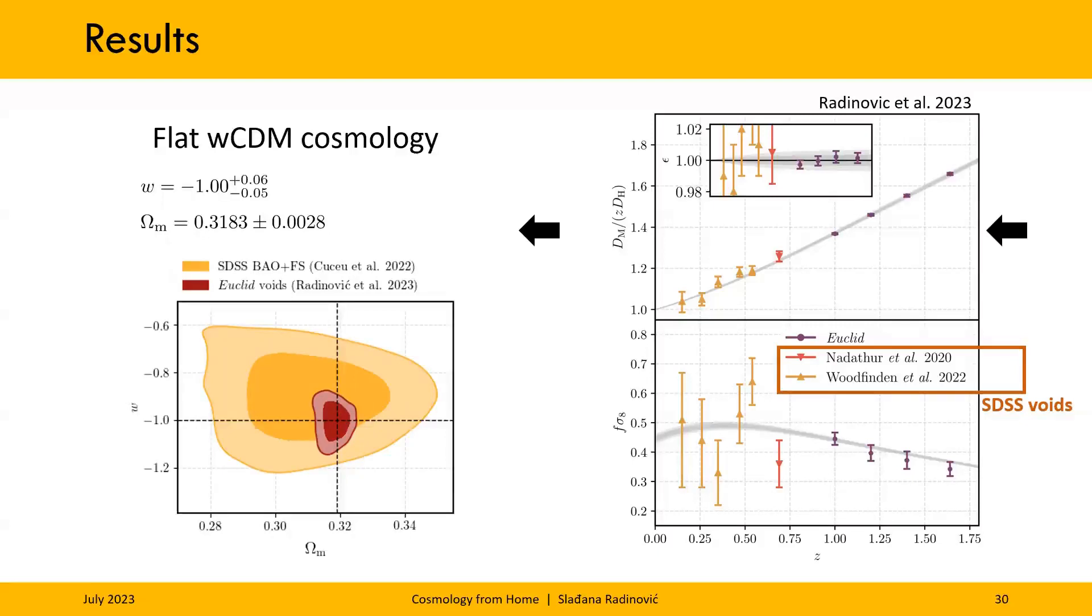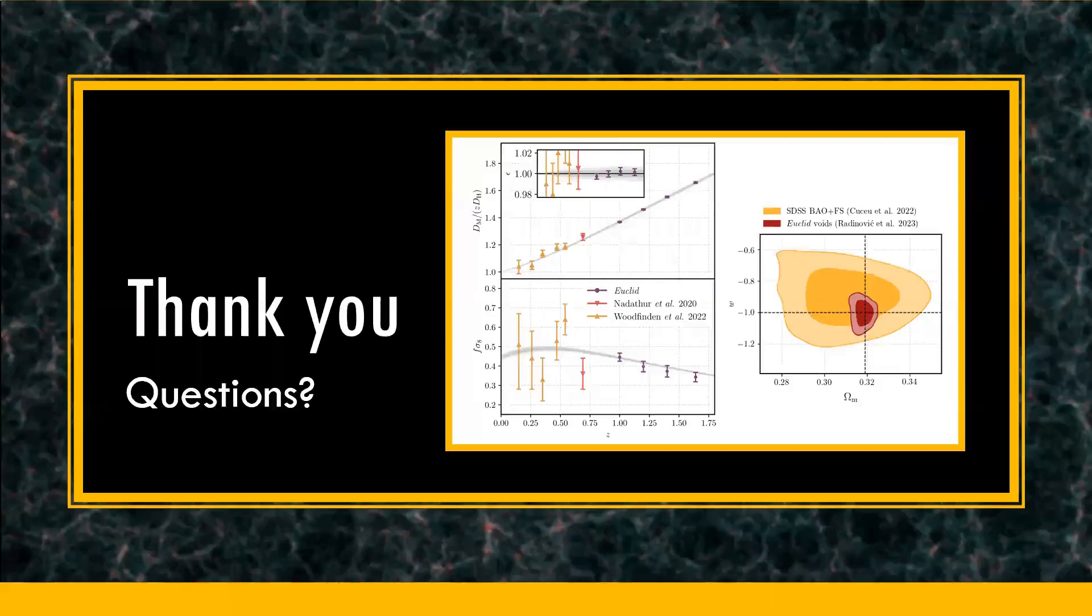The yellow constraint is now again from SDSS, but not voids. Instead, the BAO plus full shape analysis compared to just Euclid voids. This really illustrates the value of not only Euclid, but also voids as a promising new probe in cosmology. So thank you for your time. And I look forward to hearing any questions that you might have in the session.